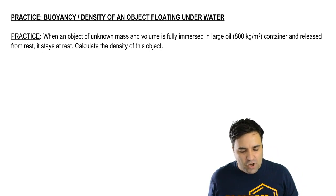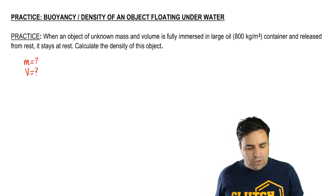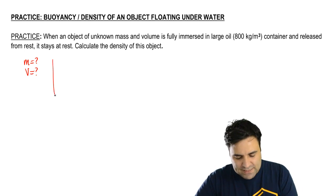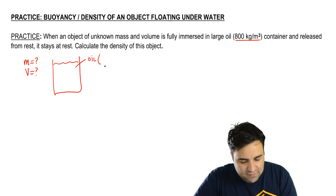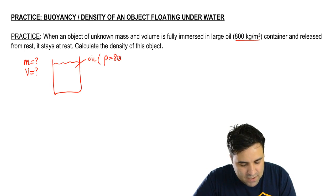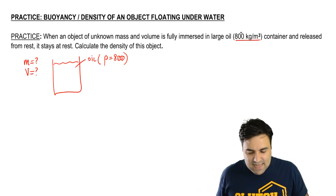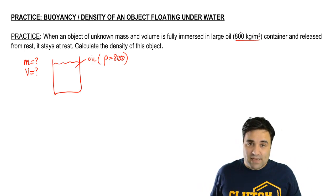So here we have an object of unknown mass and volume. I don't know the mass and I don't know the volume, but I know that it's fully immersed in a large oil container. And I know that the oil has a density of 800, row equals 800. I know its density because of the units. And it says that when you release it from rest, it stays at rest.